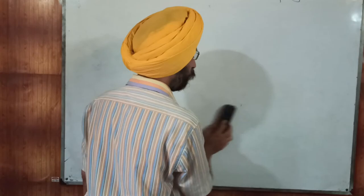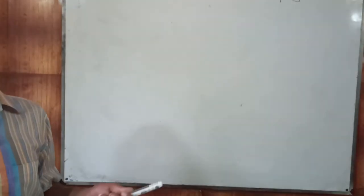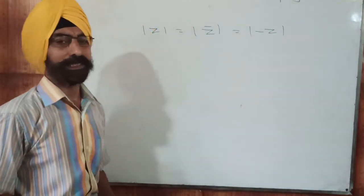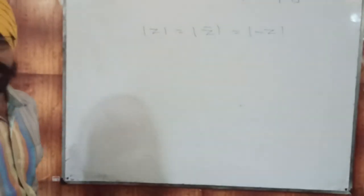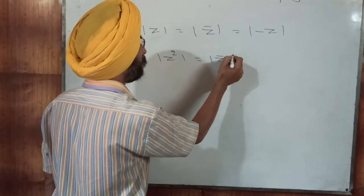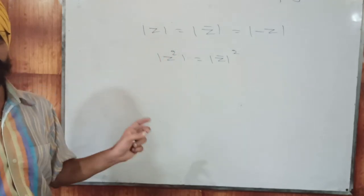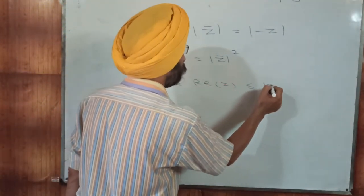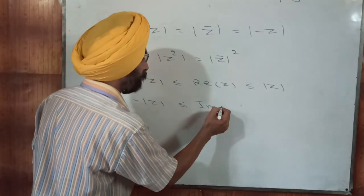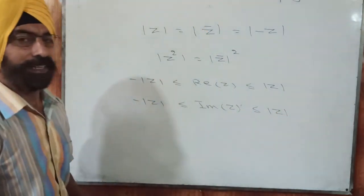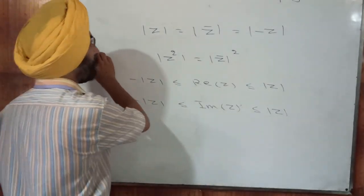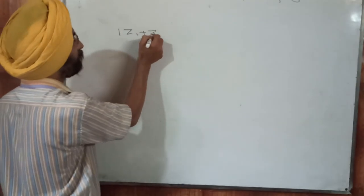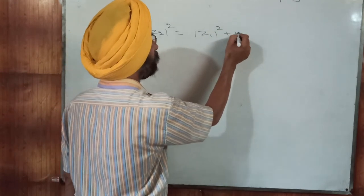There are more properties. Mod Z equals mod of Z bar equals mod of minus Z — these three are equal. Also, mod Z squared equals mod Z bar squared. Another important set of inequalities: mod of minus Z is less than or equal to the real part of Z, which is less than or equal to mod Z; and similarly the imaginary part of Z is less than or equal to mod Z.